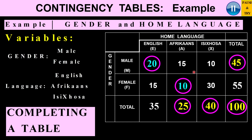Let's briefly explain the table. I've got the two variables — gender and home language. This 20 that we have circled represents the number of males whose home language is English. This 10 represents the number of females whose home language is Afrikaans. This 45 represents the total number of males. And this 25 represents the total number who speak Afrikaans. This 100 is the total of all the data.